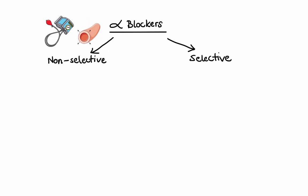Non-selective agents can block both alpha-1 and alpha-2 receptors. Examples of these are phentolamine and phenoxybenzamine, which are used in the treatment of hypertension specifically caused by pheochromocytoma — a tumor of the adrenal glands that secretes norepinephrine and epinephrine.